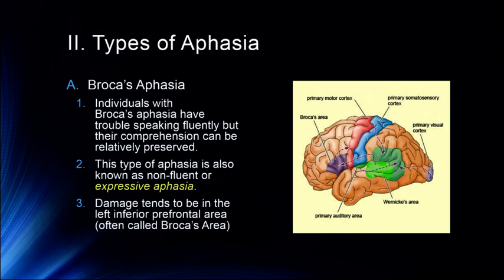I want you to note this diagram; we're going to look at it quite a bit. The large area contains what we might call Wernicke's area and shows how they're connected, because disruptions in all of these areas can result in different types of aphasia. Wernicke's area has inputs from the auditory cortex and the visual cortex, which is then conveyed to Broca's area, which goes on to the motor cortex. Damage to this left inferior prefrontal area results in Broca's aphasia, or expressive aphasia.